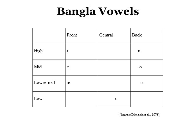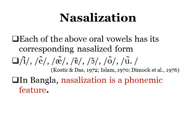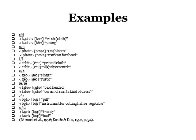These are the vowels of Bangla. According to tongue height and tongue position, they can be high, mid, or low, and front, central, or back. All of these oral vowels have their corresponding nasalized forms, and in Bangla, nasalization is a phonemic feature — that is, nasalization of vowels can make a meaning difference. For example, the word 'kacha' means 'washcloth,' but if the oral vowel is replaced with its nasalized form 'kacha,' the meaning changes to 'yang.' Other minimal pairs also prove that nasalization in Bangla is a phonemic feature.